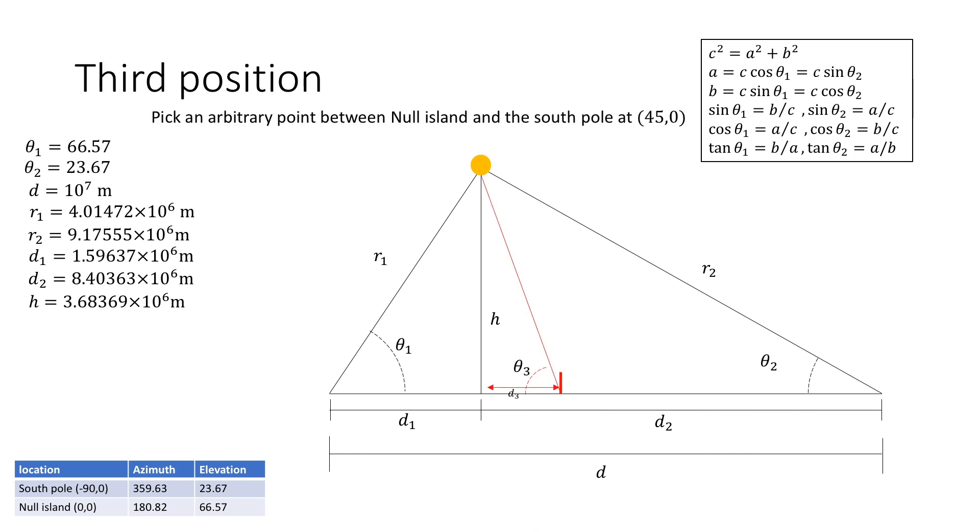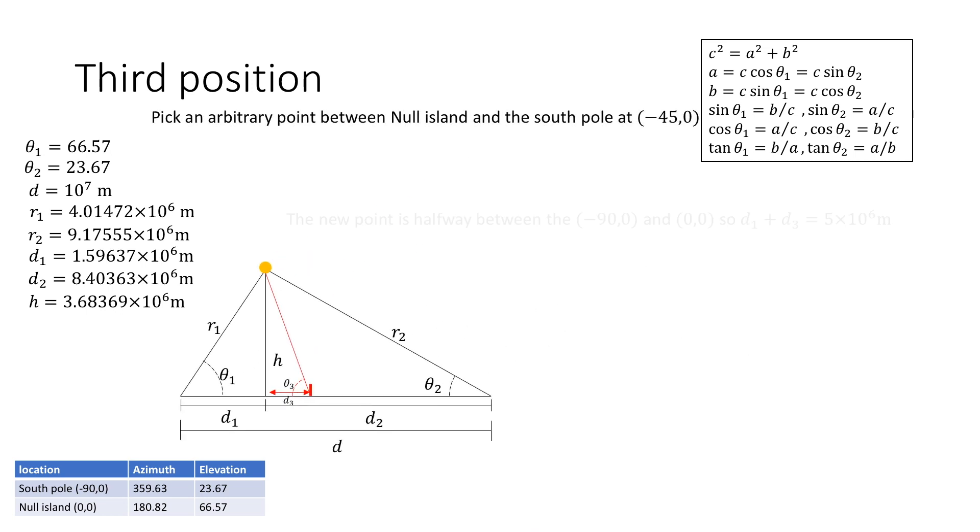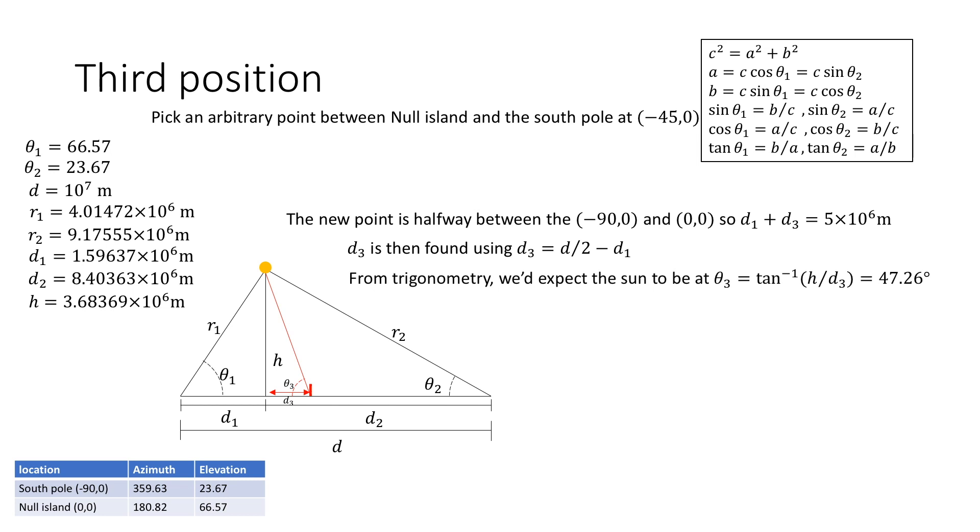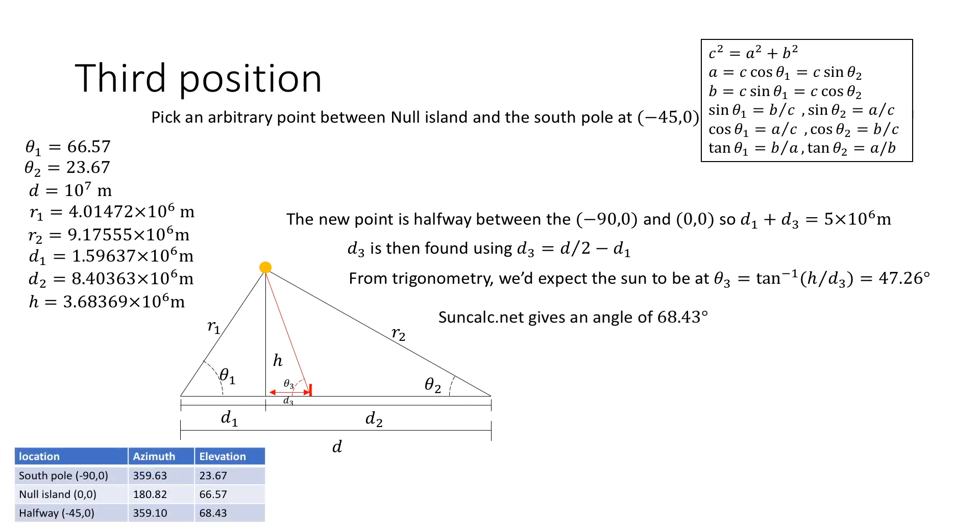We're now in a position to make our first prediction and what we're going to do is pick an arbitrary point between Null Island and the South Pole. Now I've chosen a point at minus 45 degrees, it makes the whole job a lot easier. Now this point is separated from the point where the vertical line intersects the surface of the earth and this distance is d3. Now we can make a prediction about the elevation angle of the sun which we'll call theta3. So what we do is first calculate d3. We can find that using this expression. Now from our model we would expect the sun to be at the inverse tan of h over d3, which is equal to 47.26 degrees. Now if we compare that to values given to us by suncalc.net, which I believe is also a trusted resource within the flat earth community. Again if you have the money you could fly out there and actually perform this measurement yourself. This gives us an angle of 68.43 degrees.